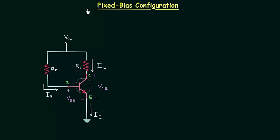The first type of biasing circuit is the fixed bias circuit. Fixed bias circuit is the simplest DC bias configuration. It is also known as the base bias configuration.